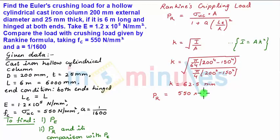area, which is pi by 4 into 200 square minus 150 square, the whole upon 1 plus 1 by 1600 into LE, which is the same as L, equal to 6000 upon 62.5 square.